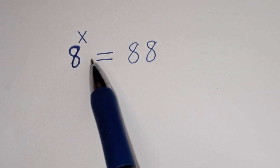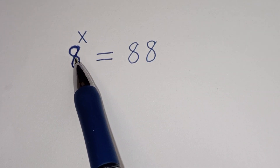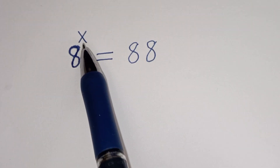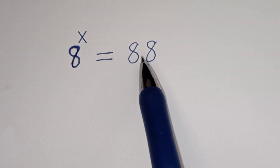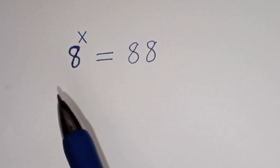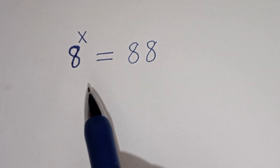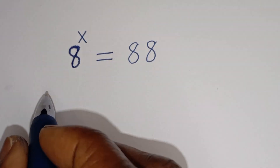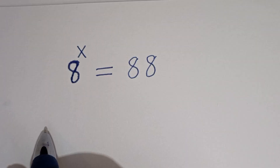Hello. How to solve for s in this equation: 8 to the power of s is equal to 88. We are going to make use of two methods here. Let's consider the first method.